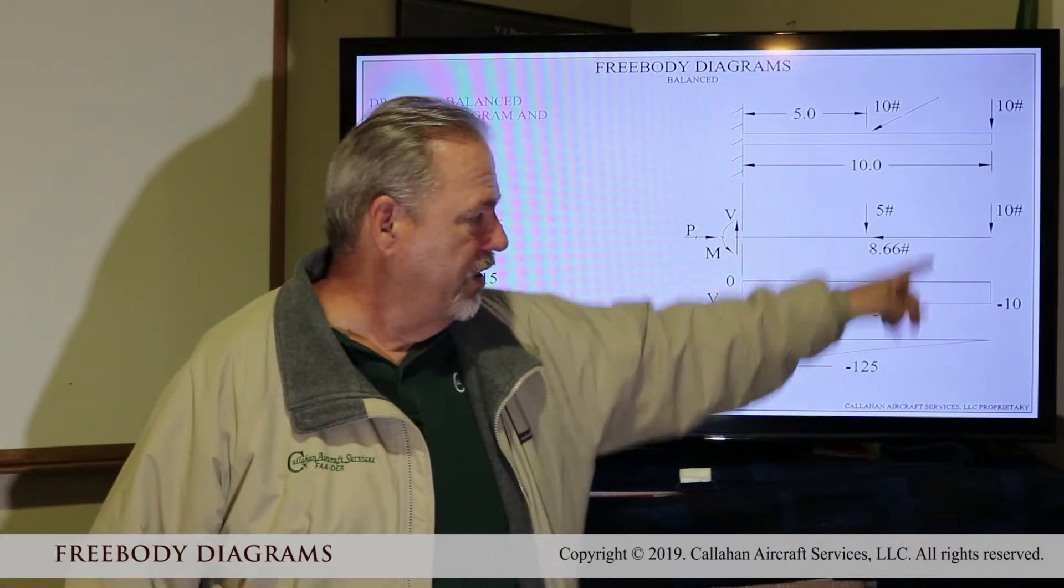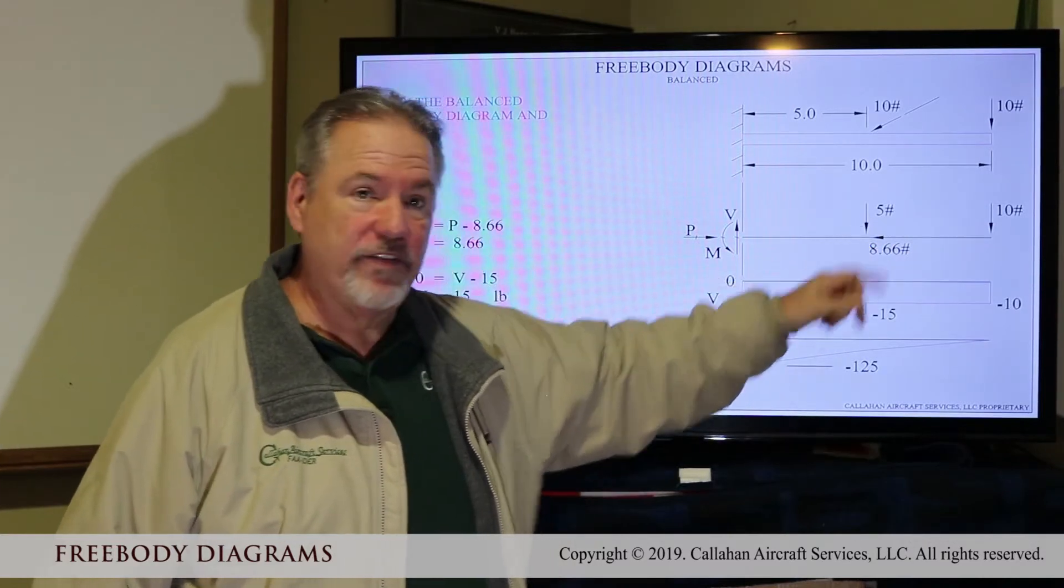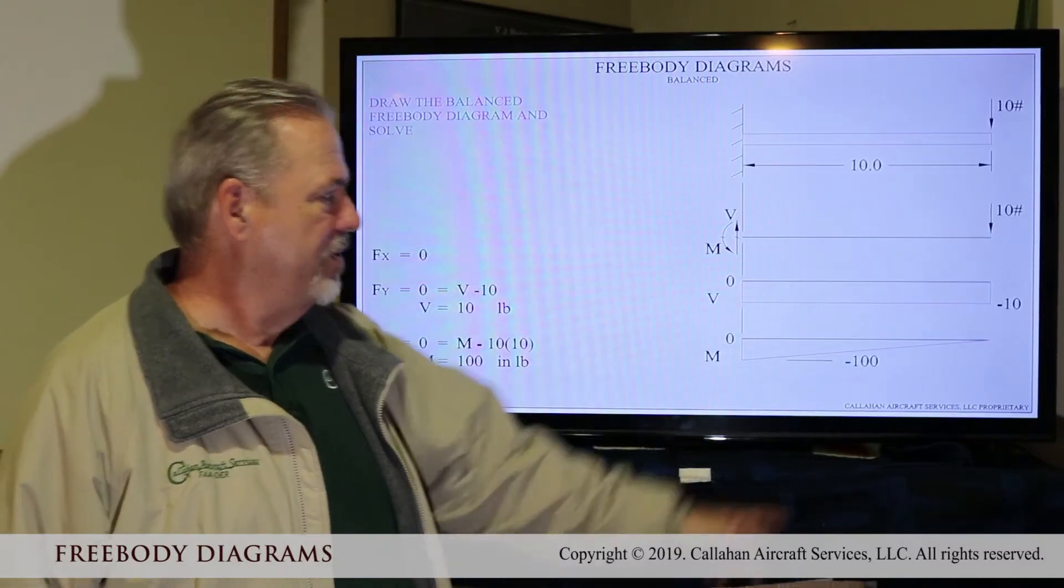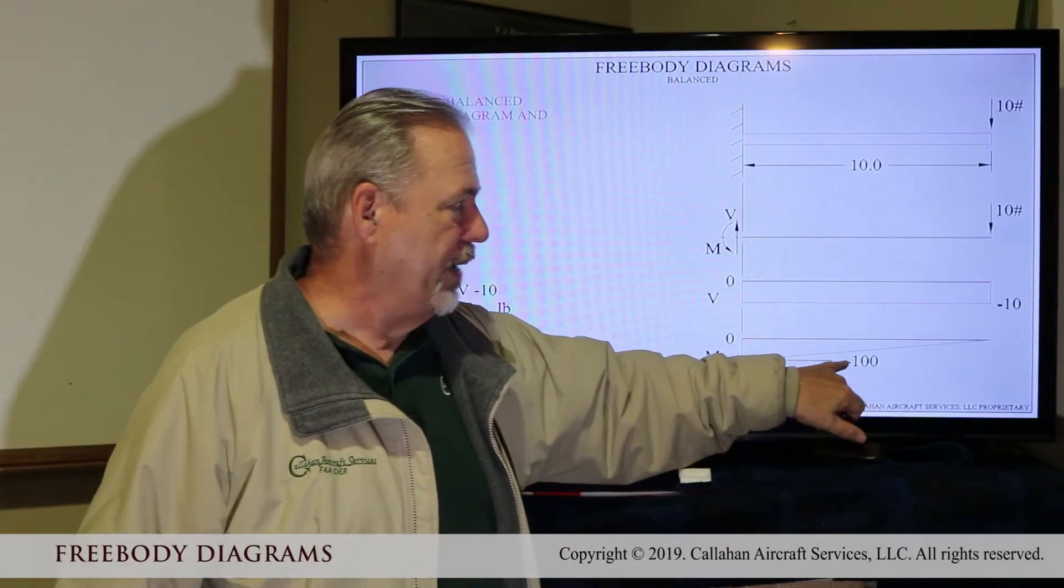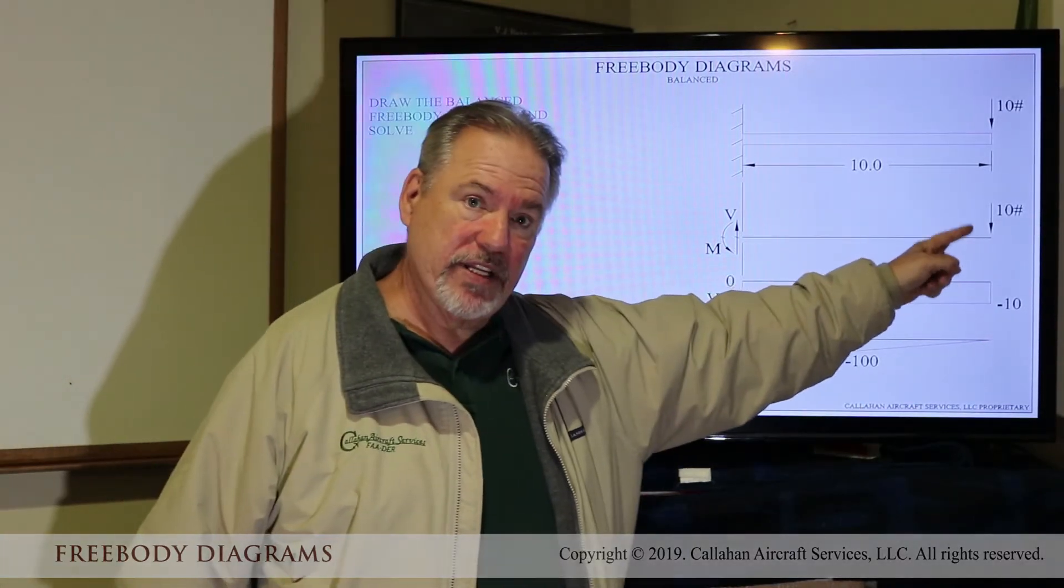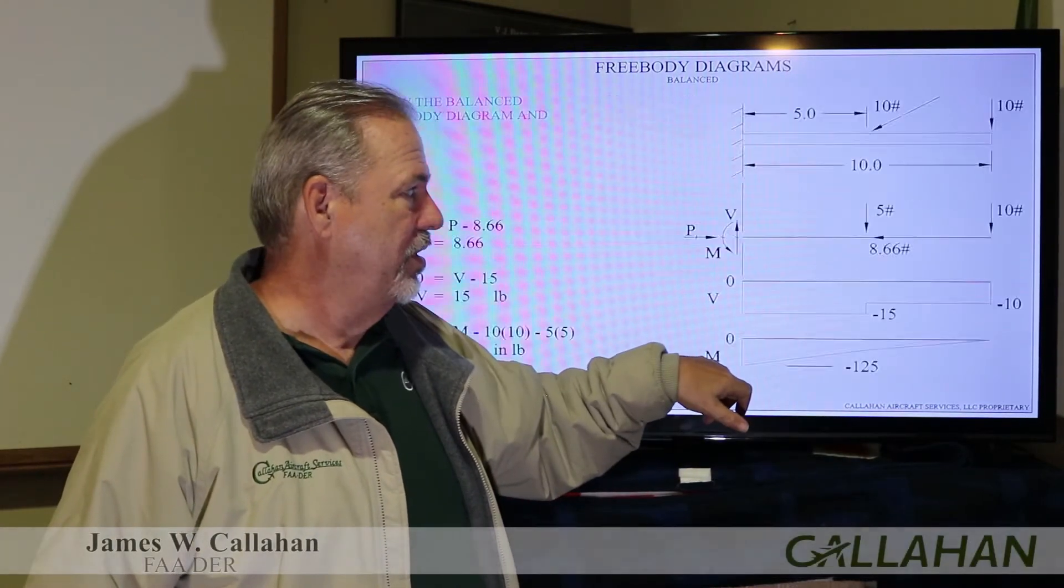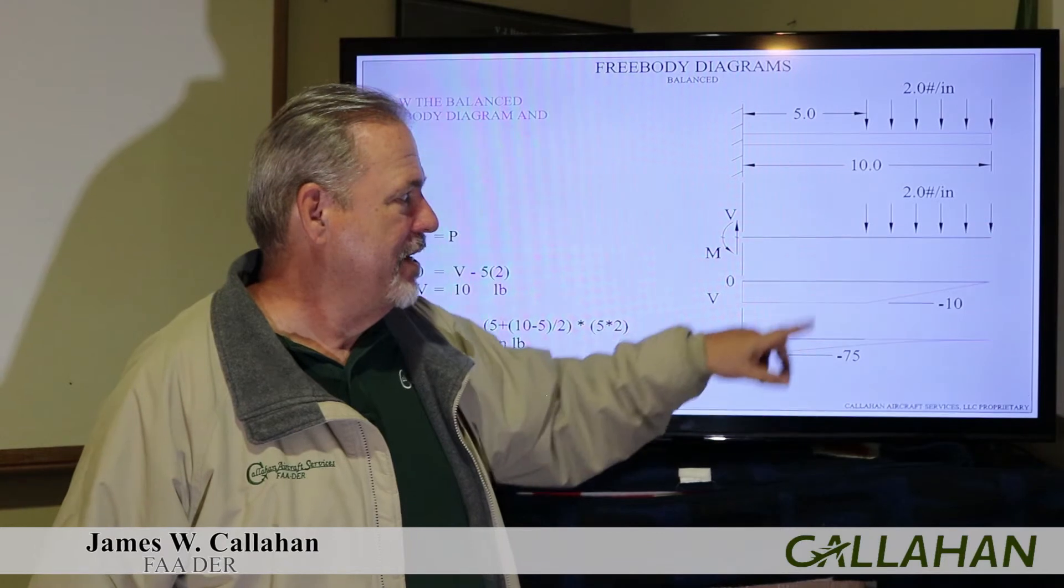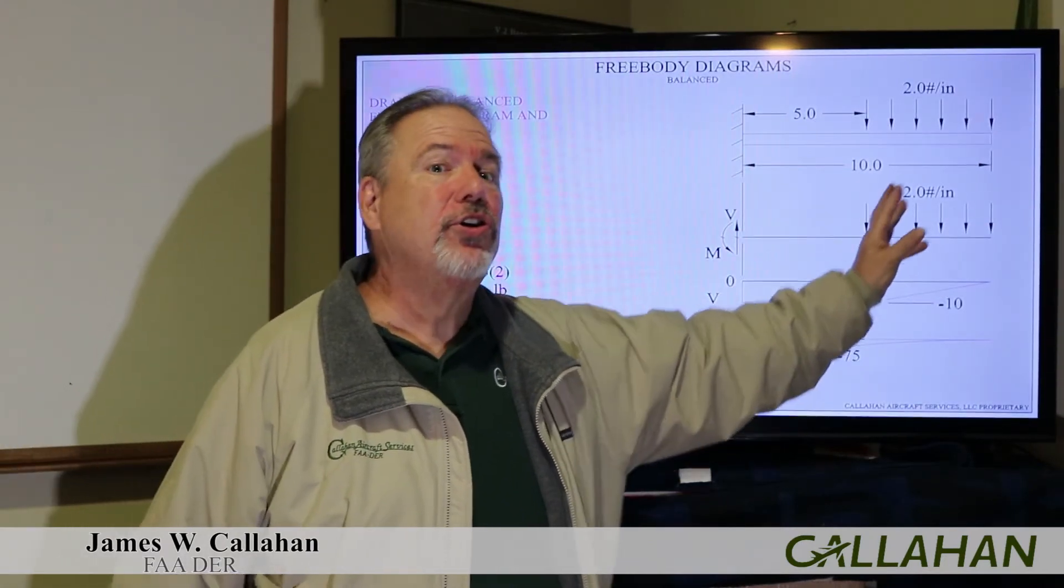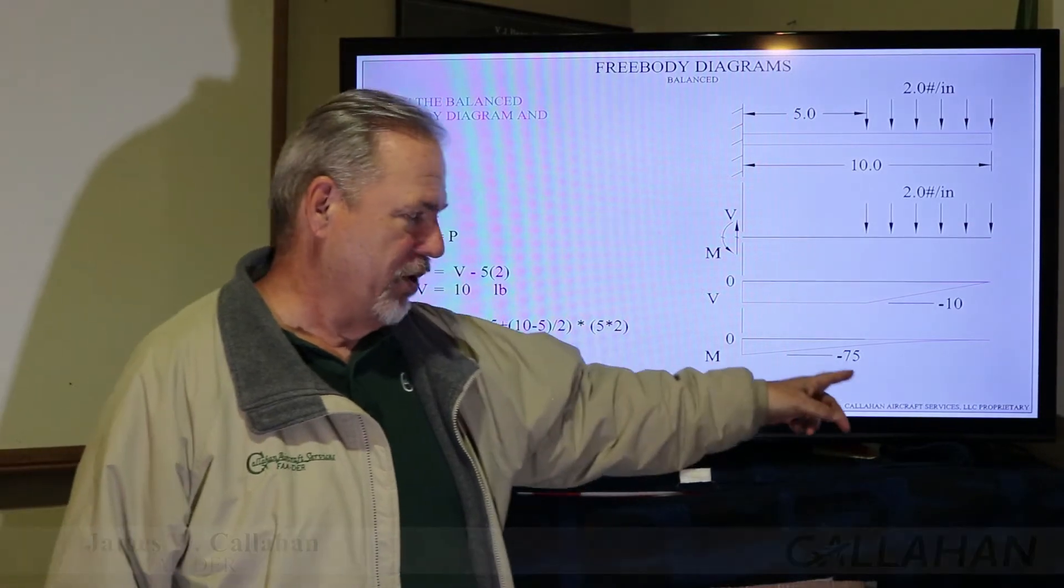This one is 125 inch pounds. Ten at the end, five at the middle. Ten at the end is a hundred inch pounds. So notice it. Ten pounds at the end is a higher moment at the wing root than a distributed load towards the end of the wing. So you have a lower load.